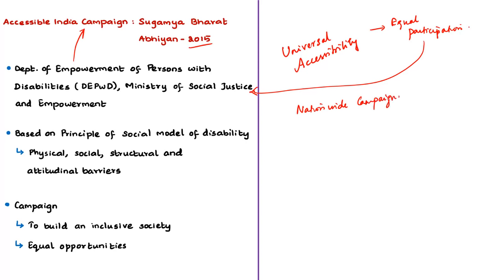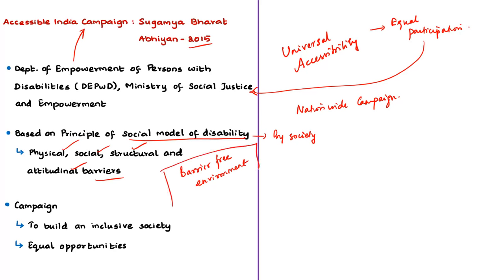The campaign is based on the principles of the social model of disability, which means that disability is caused by the way society is organized rather than by the person's limitations. These limitations include physical, social, and structural limitations, as well as attitudinal barriers that prevent persons with disabilities from participating equally in social, cultural, and economic activities. Therefore, a barrier-free environment is very important. The campaign has the vision to build an inclusive society providing equal opportunities for the growth and development of persons with disabilities.